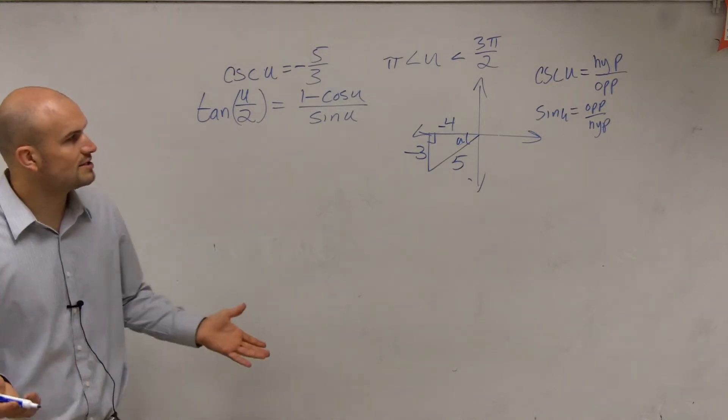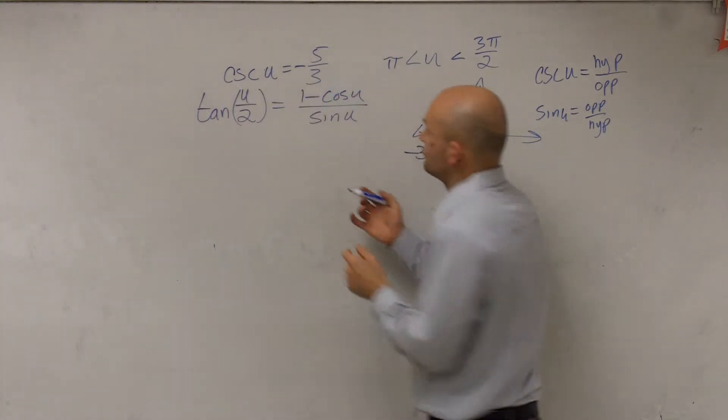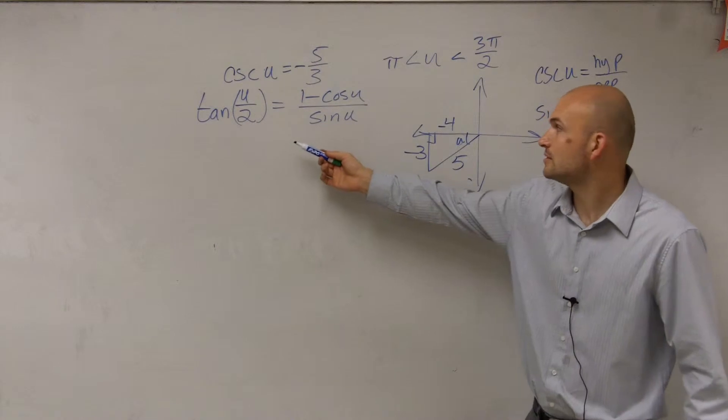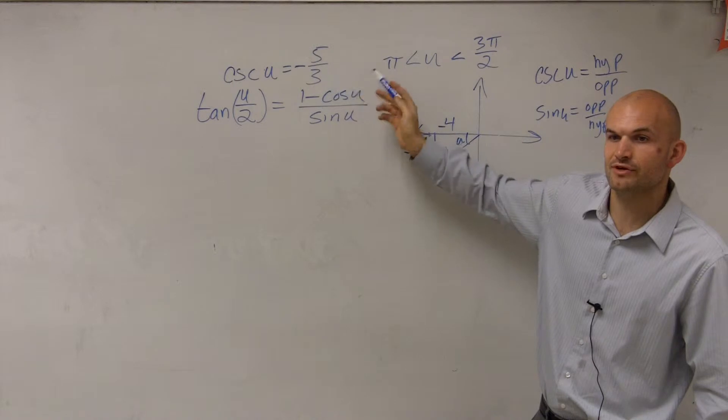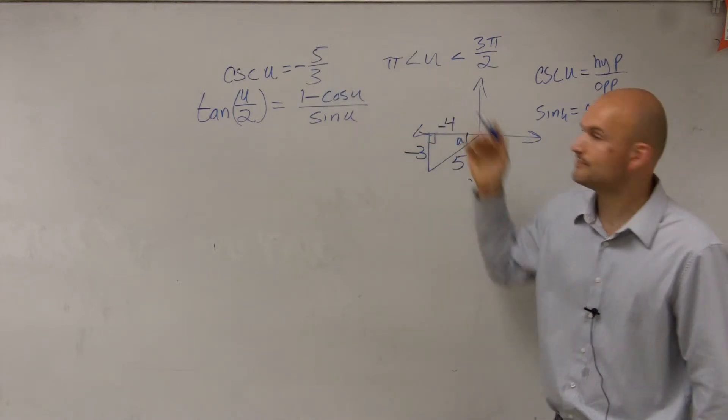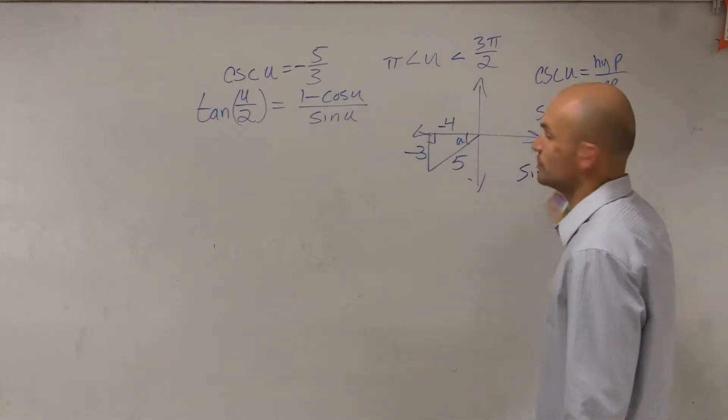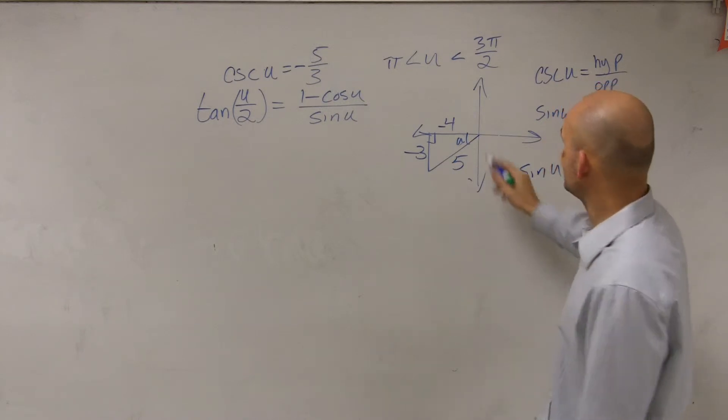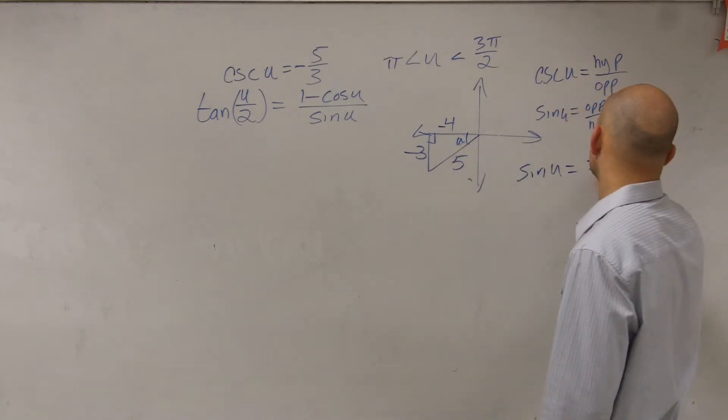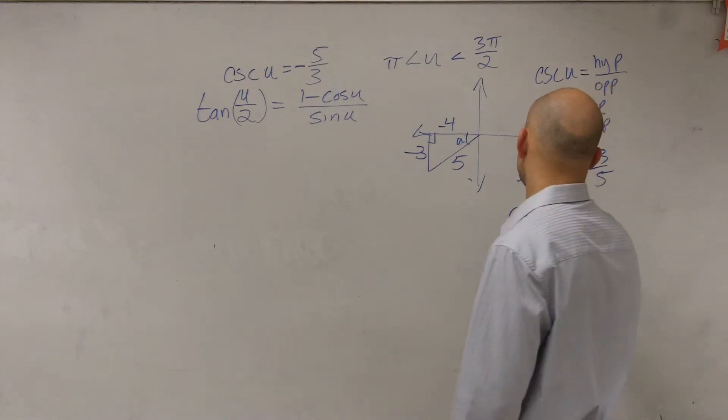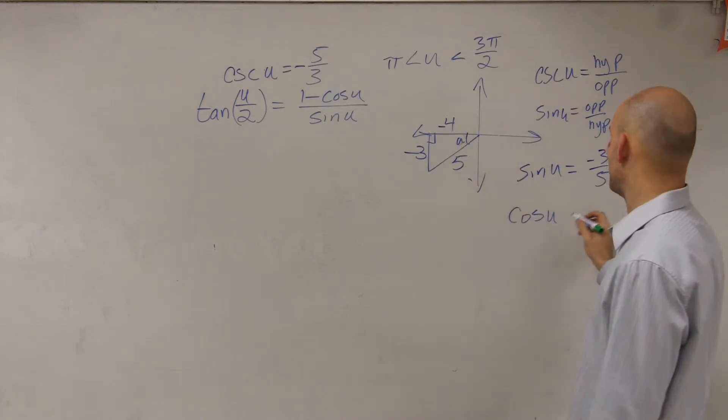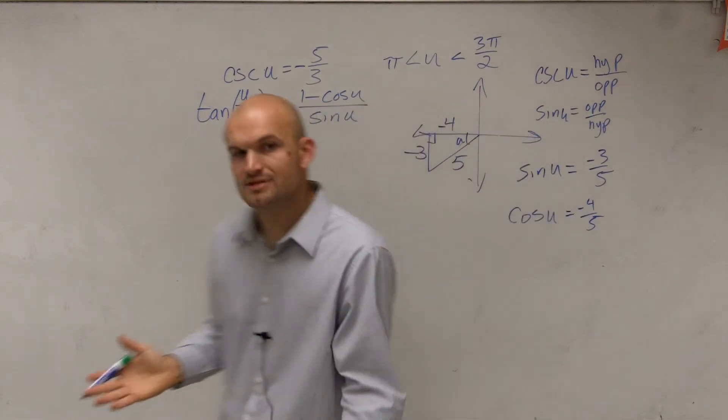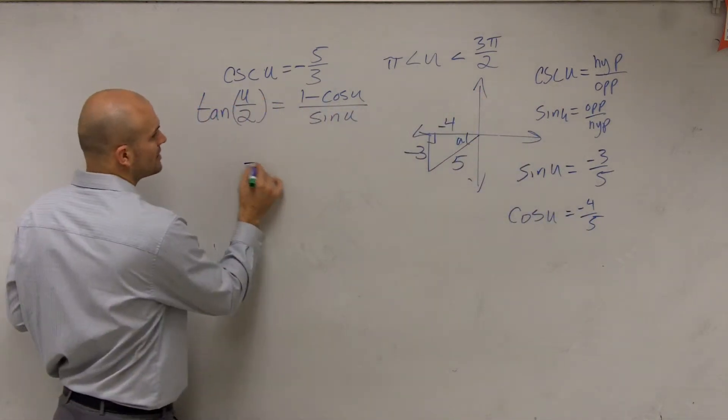So now, all we're simply going to do is look at this. And for the tangent of a half angle, we know that we need to plug in what the cosine of u is and what the sine of u is. So we can say that the sine of u in this triangle is equal to opposite over hypotenuse, and the cosine of u of this triangle is going to be equal to adjacent over hypotenuse. Now, all we're simply going to do is plug them into our formula and simplify.